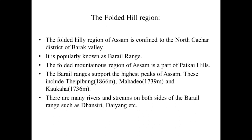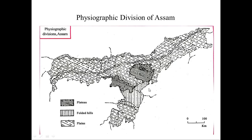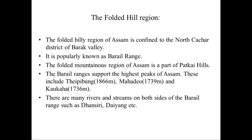The folded hill region is the Dima Hasao district and is a part of Patkai Hills. Another important characteristic is that this region has the highest peak of Assam. This includes Daipi Bango, which is around 1,866 metres, and Mahadev Peak, which is around 1,739 metres. There are many rivers and streams on both sides of the Barail range, such as Funchhi and Doyang.